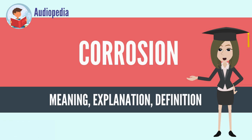As a result, methods to reduce the activity of the exposed surface, such as passivation and chromate conversion, can increase a material's corrosion resistance. However, some corrosion mechanisms are less visible and less predictable.